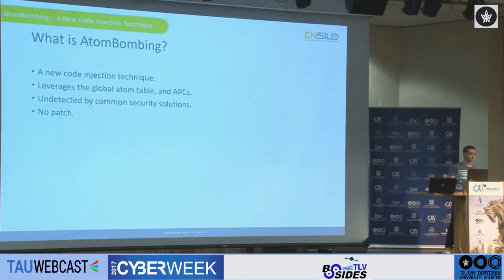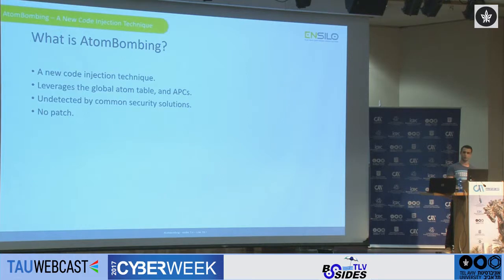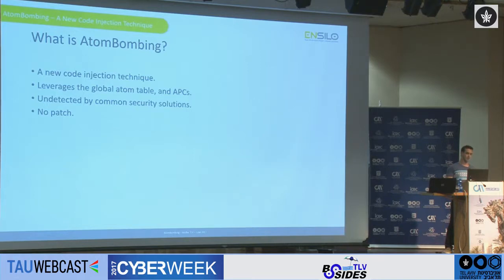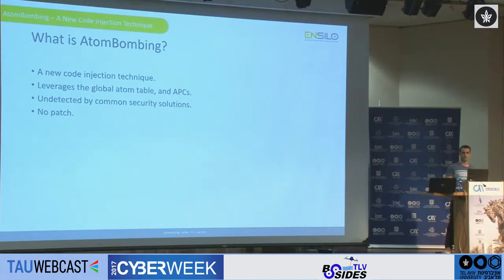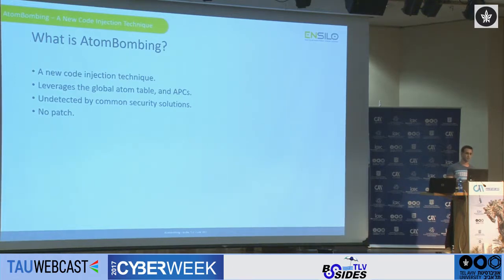So what is atom bombing? Atom bombing is basically a new injection technique that leverages the global atom table and APCs, which are async procedure calls. When we released it back in October, it went undetected by almost all security solutions that we tested it on. The interesting thing about atom bombing is it doesn't rely on any flaw, bug, or security issue. It simply uses normal features of the OS to get the code injection working. So there's no security hole to plug here — it's just features of the OS used legitimately, and there's no patch that's going to be rolled out anytime soon.